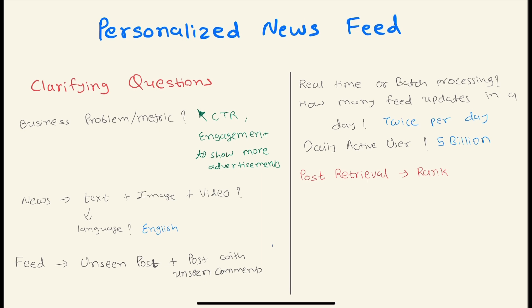How do we compute this personalized newsfeed - is it real-time or batch processing? How many times does this feed get updated? Let's say twice per day. How many daily active users do we have? Let's say we have 5 billion users. We can also ask about how much post data we have. Overall, it looks like we have to retrieve the posts and then rank them based on personal experience.